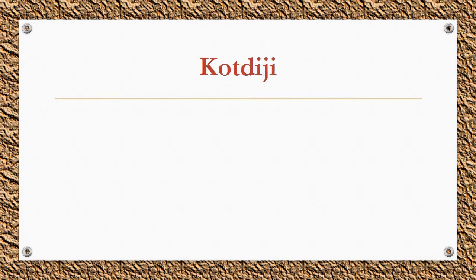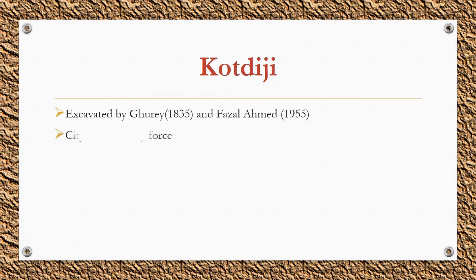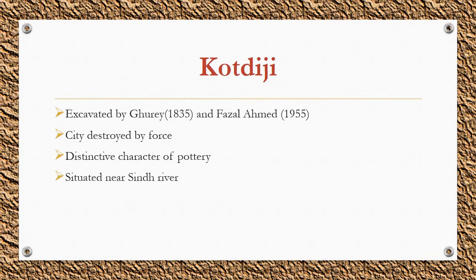Kot Diji was excavated by Ghure in 1835 and Fazal Ahmad in 1955. It was a city destroyed by force. Pottery was of distinctive character, decorated with bands of brownish paint, and an interesting motif developed from bands of loop and wavy lines into a well-known fish scale pattern, which later appears on Harappan pottery. It was situated near the Sindh river.